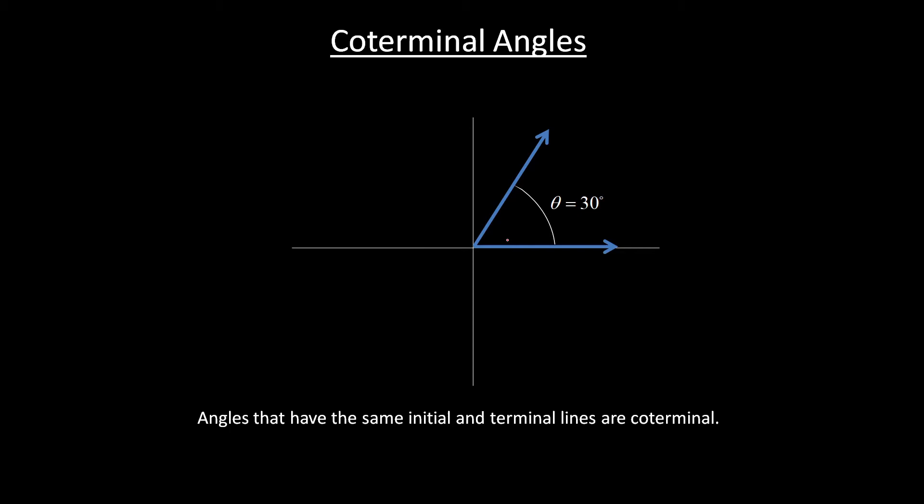Now these are all positive angles I've been drawing. We can also do negative. So let's say we start on the same initial and we rotate negative to the same terminal. Well, then that's minus 330 degrees, and that is coterminal with 30.